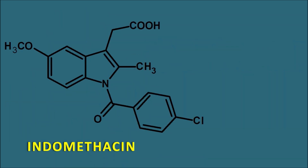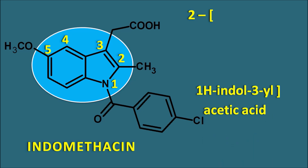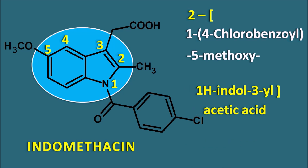The next drug is indomethacin, which is an acetic acid derivative having a heterocyclic ring system — indole. We start the ring numbering from nitrogen: 1-2-3-4-5. The indole ring is attached to the acetic acid at the second position by its third position, giving 1H-indol-3-yl acetic acid. Then we fill in the other side chains: the first position has a 4-chlorobenzoyl (parachlorobenzoyl) group, the fifth position has a methoxy group, and the second position has a methyl group. Arranging these in alphabetical order gives the full name of indomethacin.